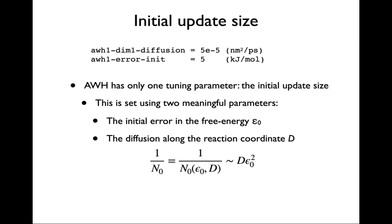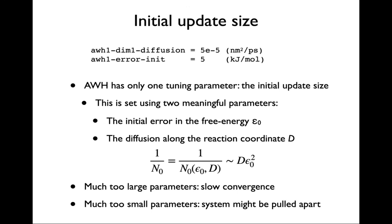The initial update size is basically the only parameter you need to set after choosing a reaction coordinate. That determines how fast you flatten out the landscape. This is in GROMACS provided by setting two parameters but actually only sets one because the update size is an intuitive parameter. We set the diffusion along reaction coordinates and an initial error estimate. These parameters are not critical and the default values we have in GROMACS work quite okay. These actually contribute to the initial update size. The only thing that can go wrong is if you have far too large parameters you get very slow convergence. If you have too small parameters the system might be pulled apart but you'll see that. There's quite a large range to play with and things can work well.